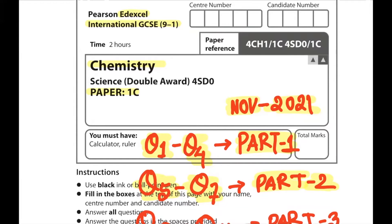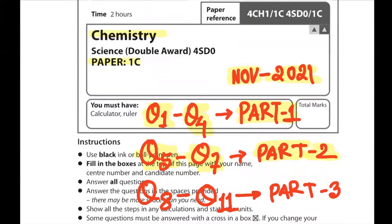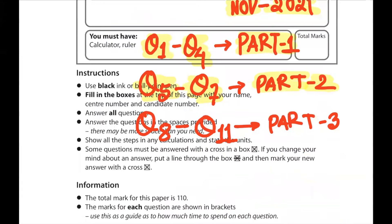Hello everyone. Today we'll be solving Edexcel IGCSE 9-1 Chemistry Paper 1C November 2021, Question 8 to Question 11. This is a part 3 video. If you haven't watched part 1 and part 2, the link will be in the description.